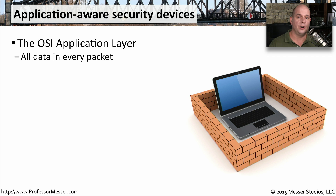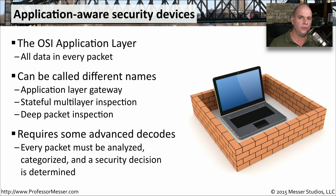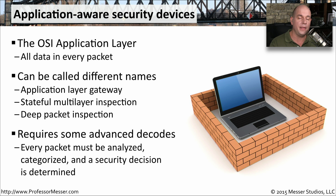Today's modern firewalls are application aware — they know everything about the data flowing through the network. You may see these referred to as application layer gateways, stateful multi-layer inspection devices, deep packet inspection, or next generation firewalls. What they're doing effectively is decoding every bit of traffic passing through the connection, analyzing and understanding exactly the type of application flowing through, and then making a security decision about whether that application is allowed or denied through the network.